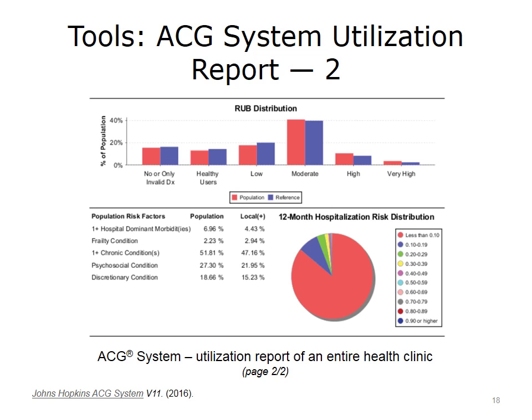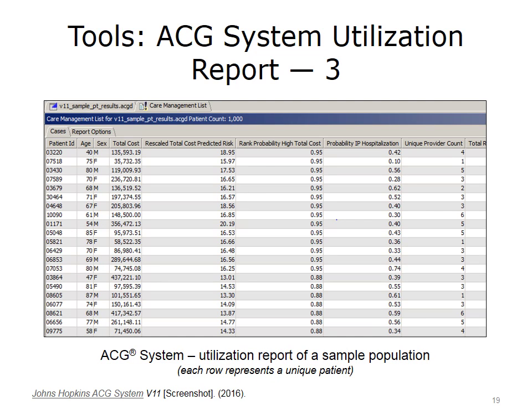The second page of the ACG report provides a summary of overall risk factors for the clinic's population. A diagram divides the population into different utilization risk bands; the clinic's population has more moderate, high, and very high-risk band members than the reference population. A pie chart shows the overall 12-month hospitalization risk distribution, in which most of the population has less than a 0.10 probability of hospitalization next year. A number of population risk factors are also listed. Another screenshot shows risk scores for individual patients, including demographic information, total concurrent cost, and multiple predictive risk scores.